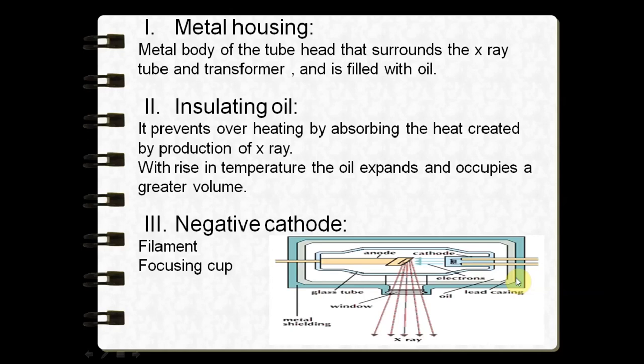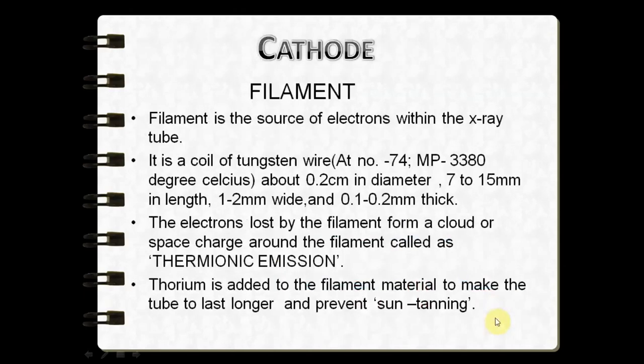As we studied, the cathode is negatively charged and the anode is positively charged. The negatively charged cathode contains the filament as well as the focusing cup. The filament is the source of electrons found within the x-ray tube.